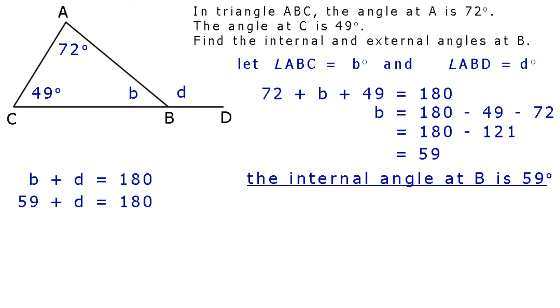Taking the 59 to the other side and changing the sign, D equals 180 minus 59. So, D equals 121. The external angle at B is 121 degrees. Nothing too difficult there, I hope.